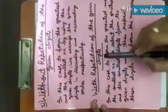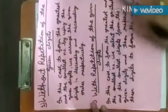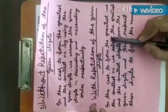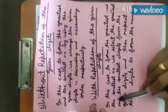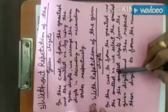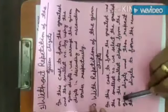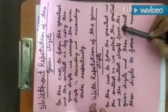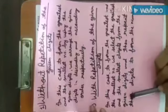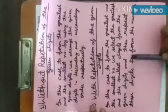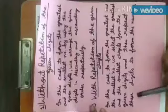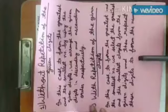Look at this — with repetition of the given digit. In this case, to form the greatest and the smallest number, we select the greatest and the smallest digit from the given digits and then repeat these digits to form the number.